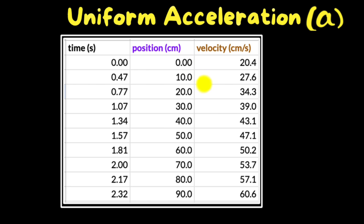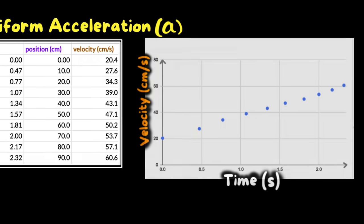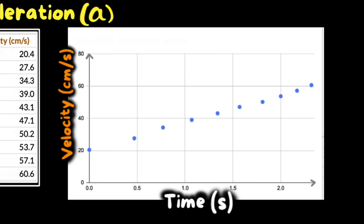So how do we get a mathematical model that connects velocity and time? We can plot a graph of velocity versus time. We choose time as our independent variable, since its passage is not controlled by anything, and velocity as the dependent variable. The dependent variable is drawn on the vertical axis, and the independent variable on the horizontal. Let's plot that graph — and here's what we get.